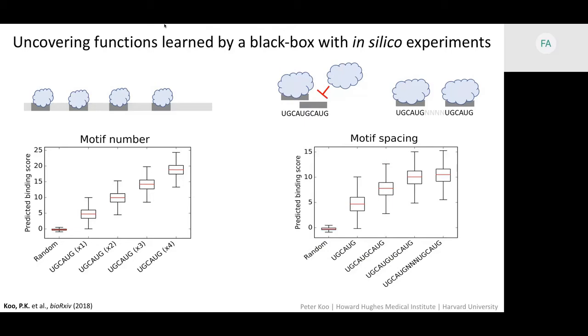So here's an example of that on the left here, where we embed different numbers of motifs into random RNA sequences and send it through the network. And you can see that our neural network learns that each additional motif contributes an additive model. And it's linear here,